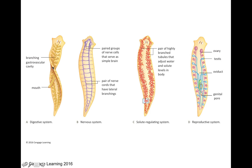Here's what your planarian looks like. This is the gastrovascular cavity — you suck food in through the mouth, through the pharynx, and it goes through all these cavities and diffuses food out. There are the eye spots that aren't really eyes but kind of look like them. Here's the nervous system — we have the big ganglia up here, and then these evenly-spaced nerve branchings like rungs of a ladder that coordinate movements. Here we have the solute-regulating system of little tubes constantly taking water and pumping it back out. And finally, the reproductive system with ovaries and testes, oviducts, and genital pores that transport egg and sperm out into the aquatic environment.